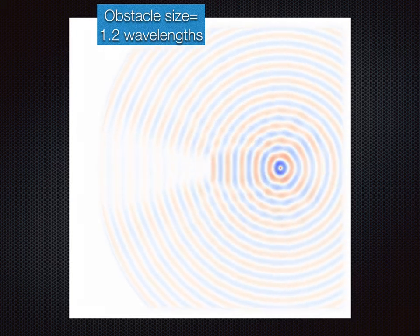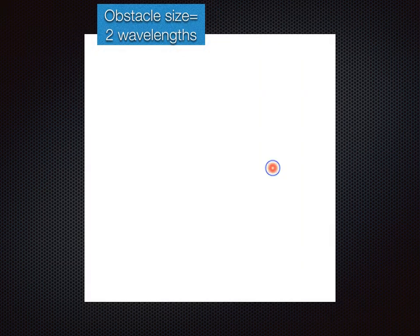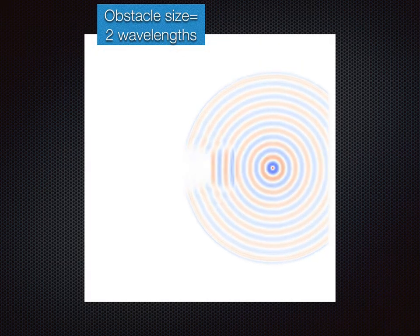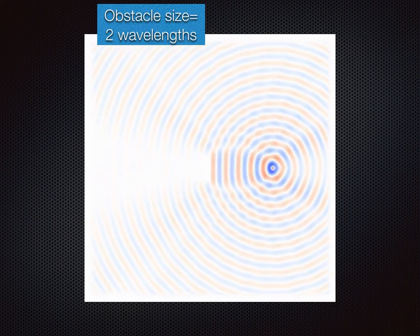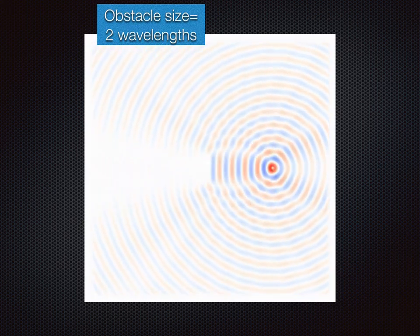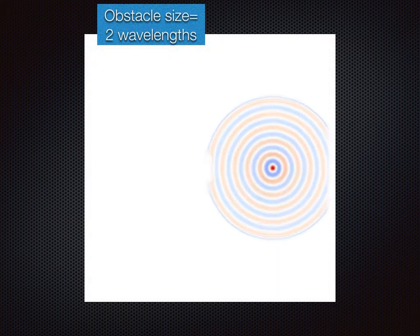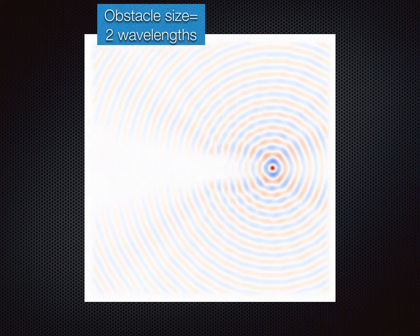This is at 1.2 wavelengths and still we observe that wave propagation is more or less unaffected. At 2 wavelengths, we begin to see some region where there is no wave but there is still significant diffraction. This is the second region of wave scattering.